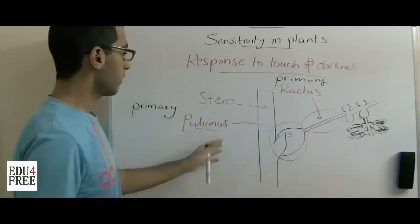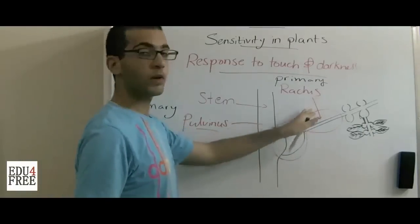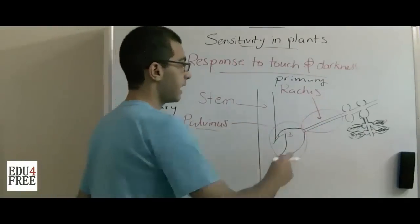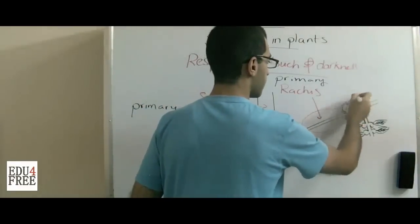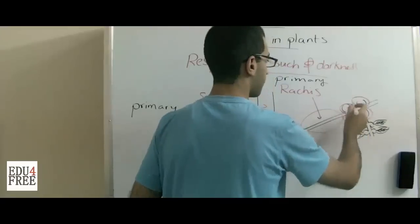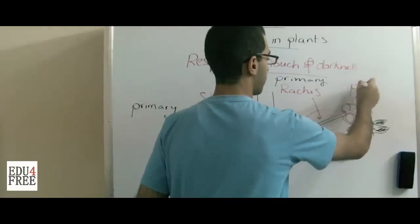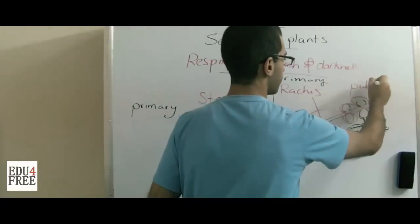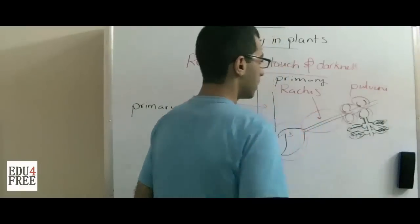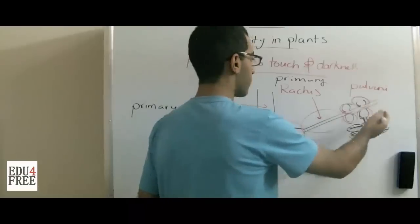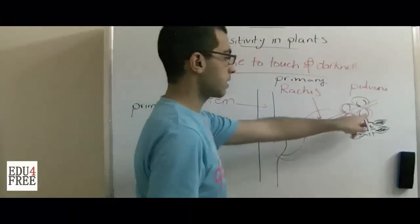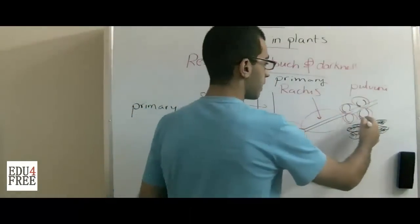Each primary pulvinus carries a primary ratches. Then, at each primary ratches, we have four secondary pulvini. This plural is pulvini, and of course, each secondary pulvinus carries a secondary ratches.